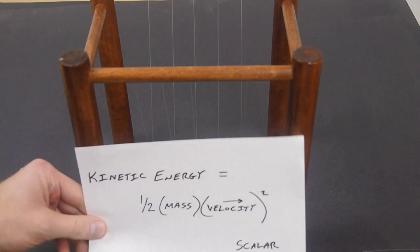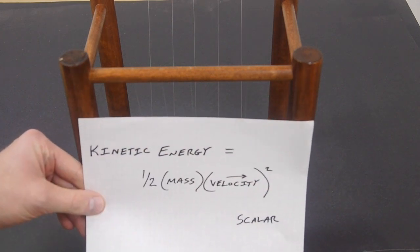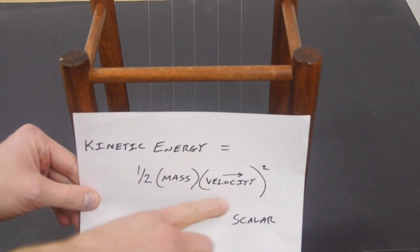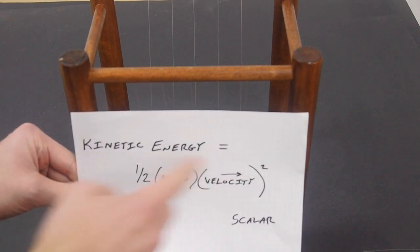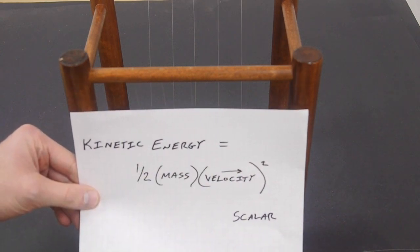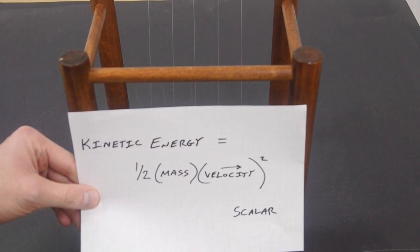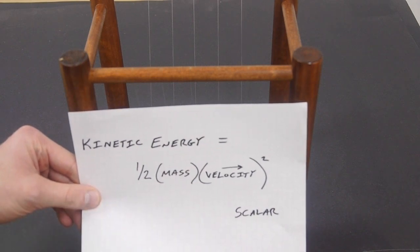You might remember that kinetic energy is one half times the mass times the velocity squared, and velocity is a vector quantity. There is direction associated with velocity, but since it's squared this whole quantity is scalar, so the kinetic energy of a golf ball is the same as the kinetic energy of a space shuttle or whatever. It doesn't matter what direction or what mass, this is just one scalar quantity.